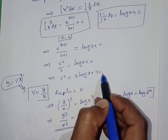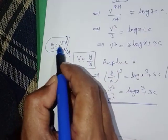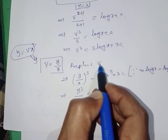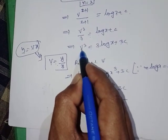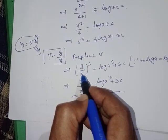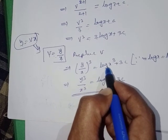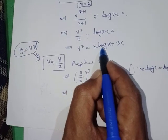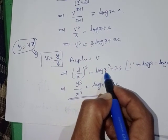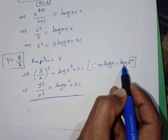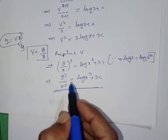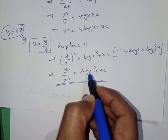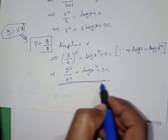Since y = vx, we have v = y/x. Replace v: (y/x)³ = log(x³) + 3C. Using m·log a = log(aᵐ) and splitting the power value: y³/x³ = log(x³) + 3C is the required solution.